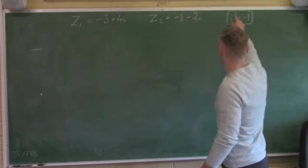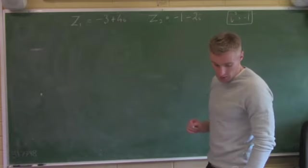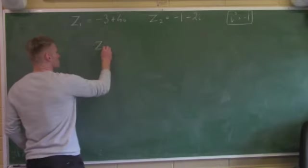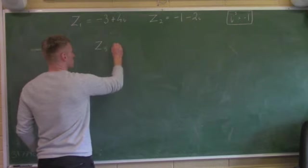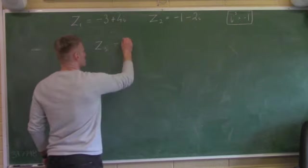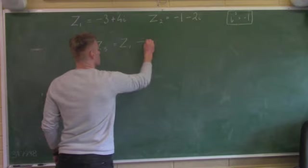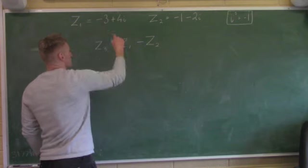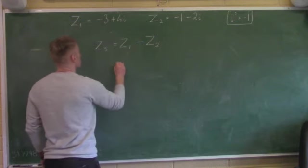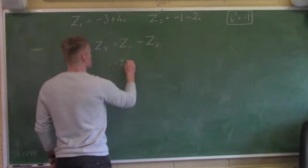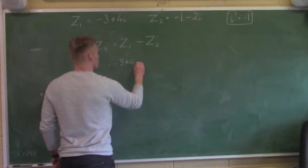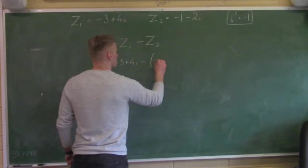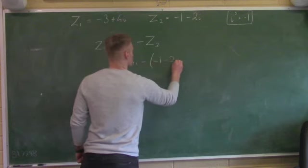The question also tells us that i squared is equal to minus 1. Part 1, we're going to figure out Z3. The question tells us that Z3 is equal to Z1 minus Z2. Step 1 is substituting: instead of Z1, I'm putting in minus 3 plus 4i, and instead of Z2, I'm putting in minus 1 minus 2i.